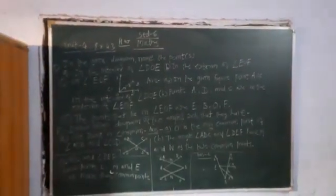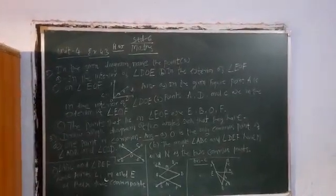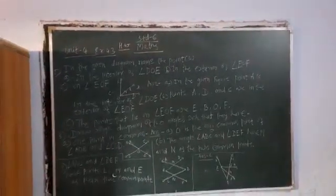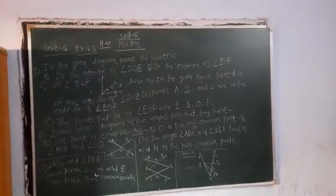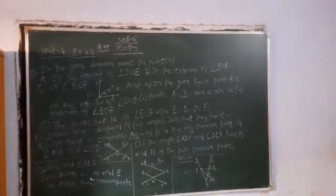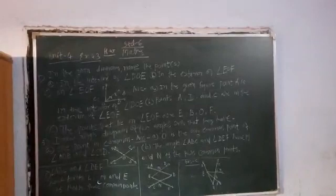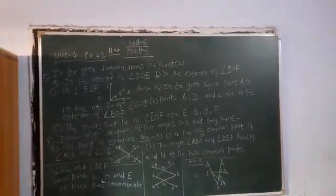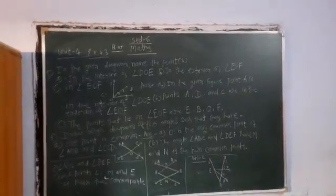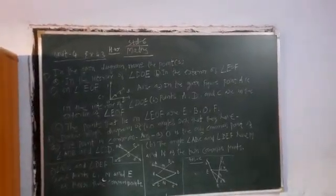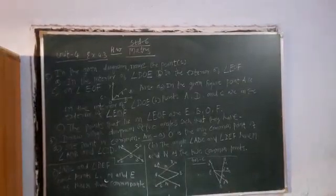Hello students, good morning. Standard 6, subject Maths, Unit 4, Exercise 4.3, Question number 2. In the given diagram, name the points: A in the interior of angle DOE, B in the exterior of angle EOF, and points on angle EOF.